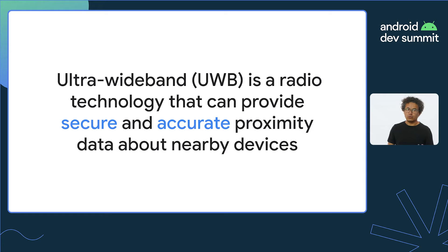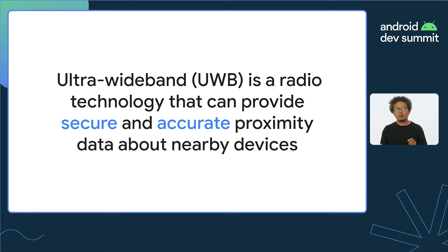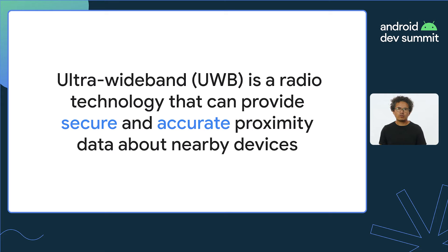Ultra Wide Band, or UWB, is a technology that enables secure and accurate communication at very short ranges. It can measure distance, angle, and elevation as close as 3 inches or 10 centimeters, and unlike GPS, also works indoors.